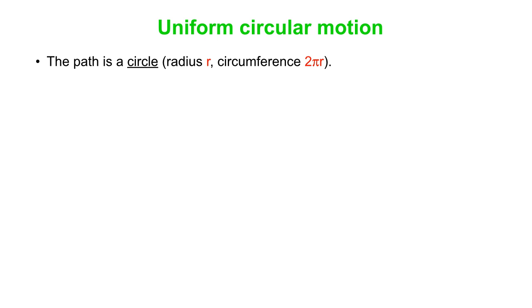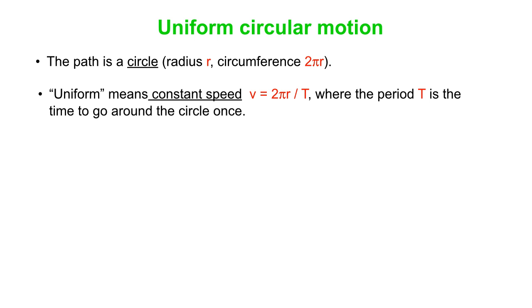So summarizing circular motion, uniform circular motion, the path is a circle with a radius R circumference 2πr. What does uniform mean? Well, it means constant speed. So V is distance over time, 2πr is once around, the distance, the time for once around is what we call the period, capital T.